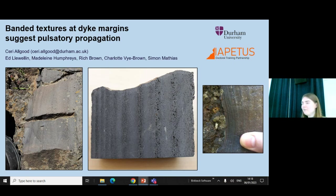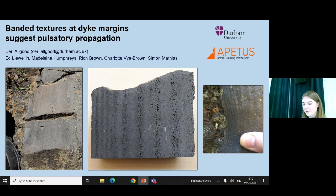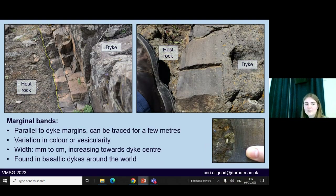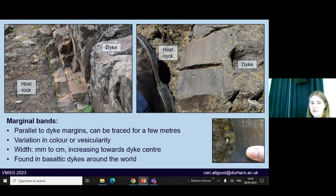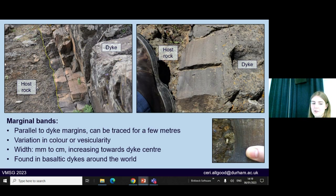These two photos on the left and on the right are from Tenerife where I've done some fieldwork, and this sample in the middle is from the Columbia River basalts. The marginal bands can be found at the dike margin about 10 to 15 centimetres away from it, and they run parallel to it. Where the exposure is good enough you can usually follow a single band for a few metres.